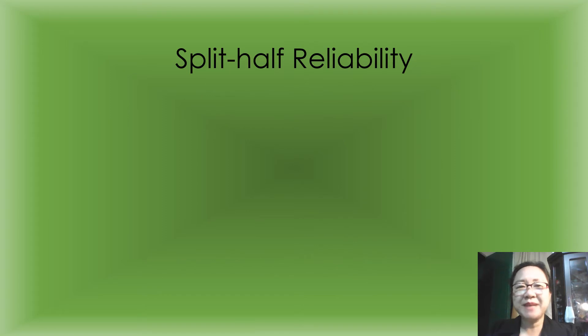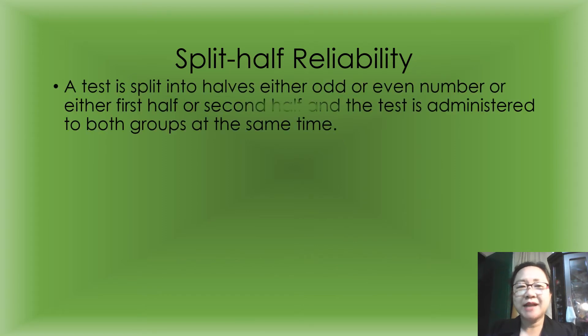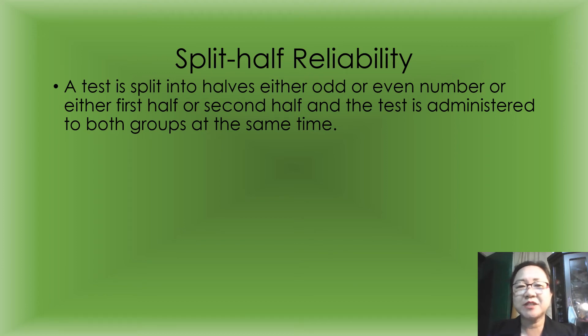Split-half reliability: a test is split into halves — either odd and even numbers, or the first half and second half. The test is then administered to both groups at the same time.